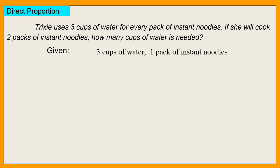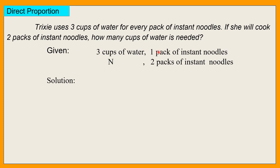Given natin dito is 3 cups of water, 1 pack of instant noodles. And then N cups of water, 2 packs of instant noodles. Solution: since this is direct proportion, 3 over 1 is equal to N over 2. Cross multiply: 1 times N and 3 times 2. Mabilis lang ito — 1 times N is just N, and 3 times 2 is 6.